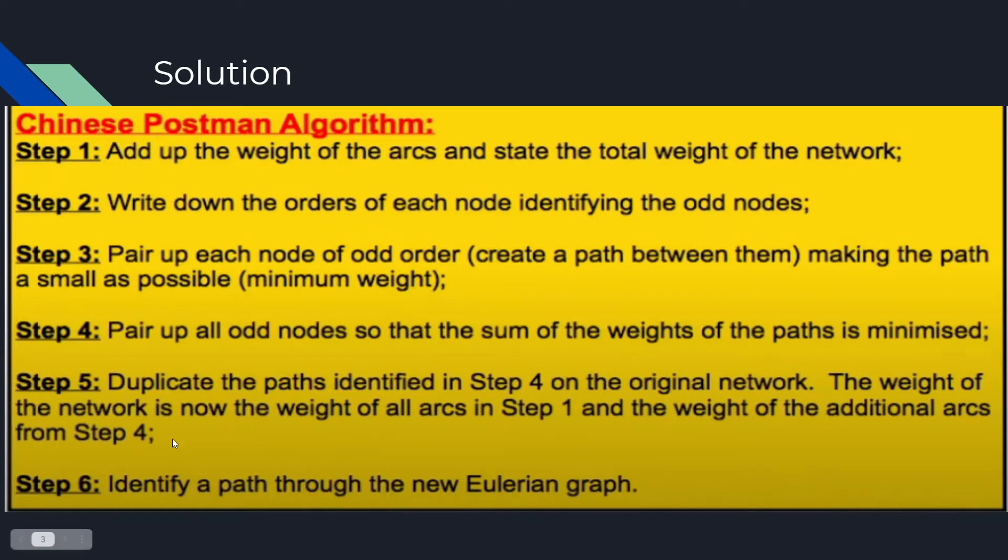So, now we know the minimum weight required to travel through our graph or network. And our final step is to identify a path through this new Eulerian graph where we have essentially added extra edges to the odd vertices to make them even. So, last step, just find a path through this new one where we're going to repeat certain edges in our graph to get our final results.